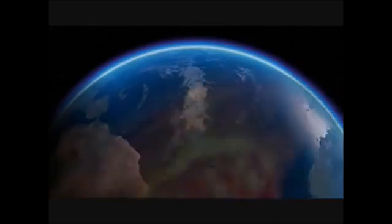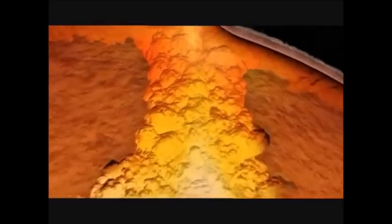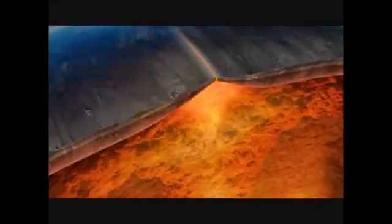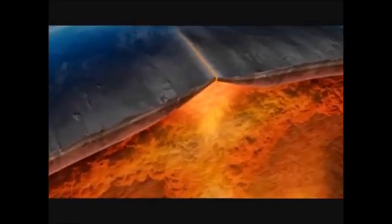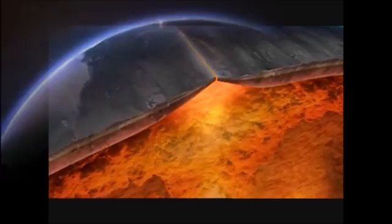Oceanic plates move under gravity because they are colder and denser than the mantle below. As they do so, the mantle wells up, and the crust bulges, ruptures along weak points called faults, and eventually rifts apart.